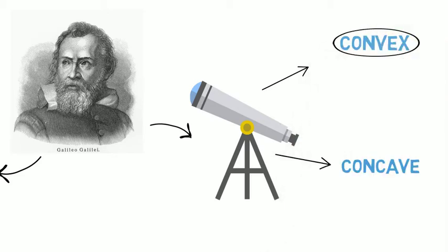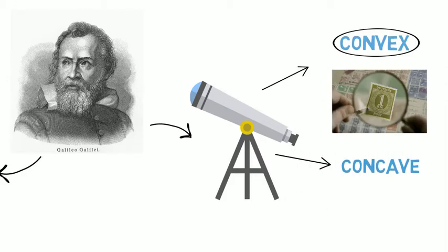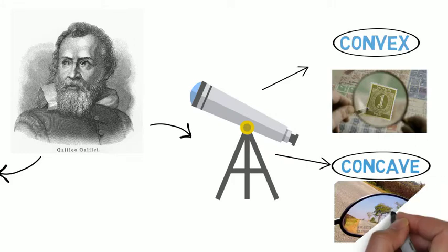For now, think convex lens as something that can make objects look bigger and concave makes those long distant objects look clearer.